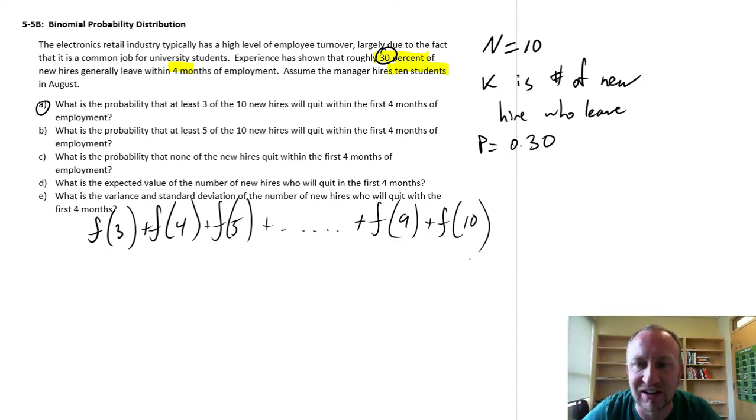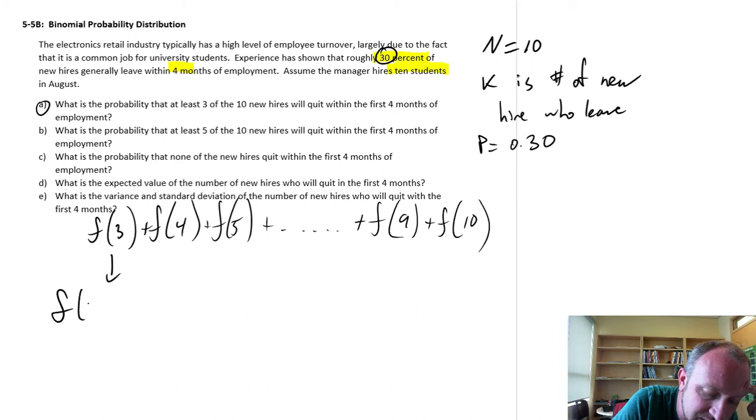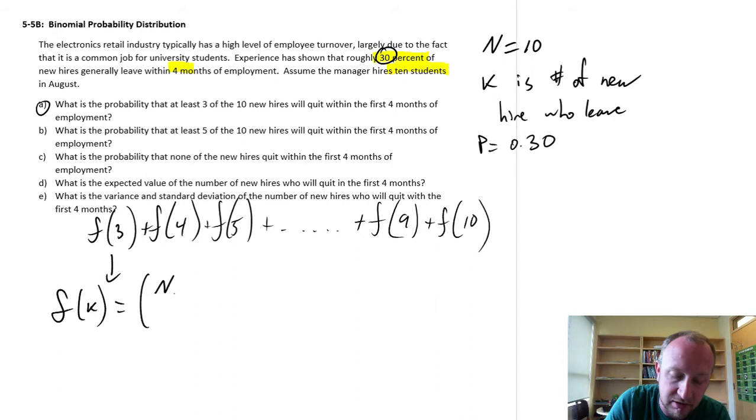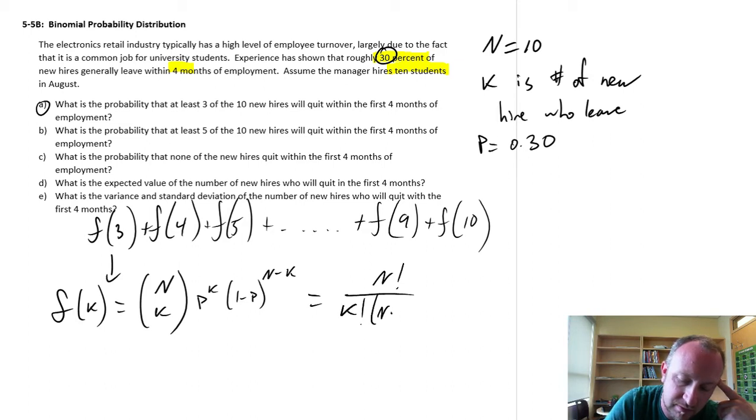So that would be the probability of at least 3 of our new hires leaving. That can be a very long problem to do by hand, because we know that for each of these probabilities, so the probability of k successes, if I have n trials, k successes, so that's the factorial, or the number of combinations using the factorial operator, and times the probability associated with each of those.